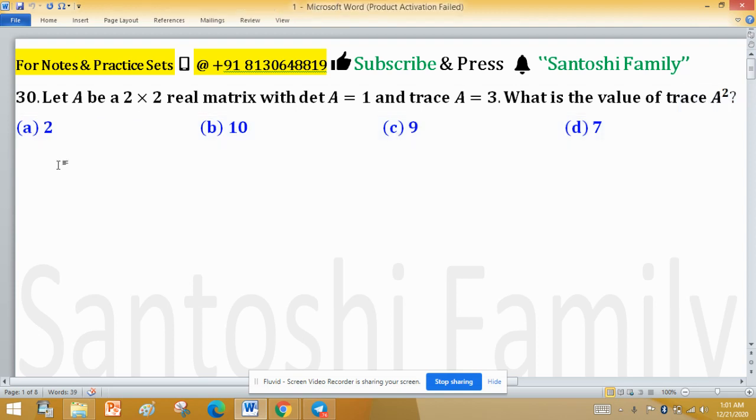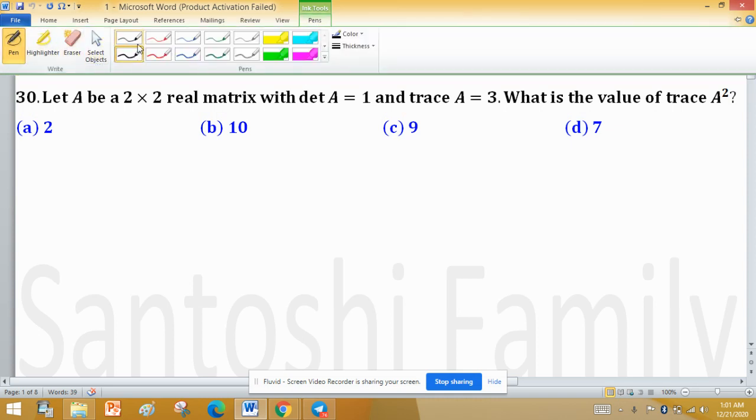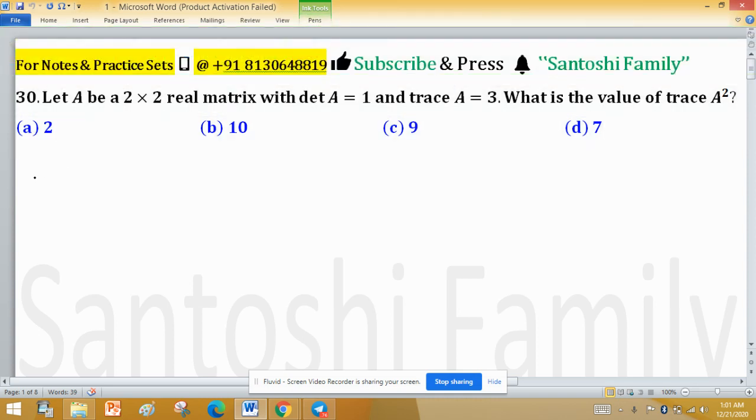Four options are given to us and we have to find the right one. What do we need to find? We need to find trace of A squared.